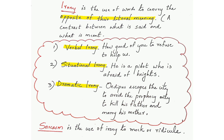Situational irony is when a statement is fine in normal situations, but in a particular context it becomes ironic — for example, 'a pilot who is afraid of heights.' Being afraid of heights is not unusual, but for a pilot it is situationally ironic. Dramatic irony creates a dramatic effect in literature — in Oedipus Rex, Oedipus hears the prophecy that he will kill his father and marry his mother, tries to escape it, but ultimately ends up fulfilling the prophecy anyway.